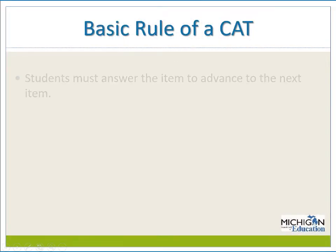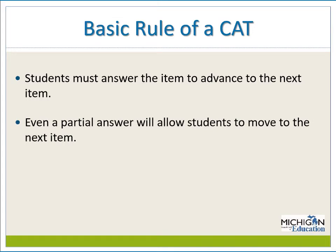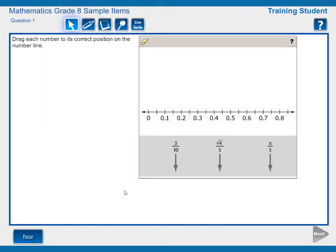In the CAT, students need to answer an item to move to the next item. A partially completed response box will allow students to move to the next item. For example, if the item requires students to move three numbers to correct positions on a number line, moving just one number to the number line will allow them to advance. Note how the Next button is dark gray. This signals that the Next button is active and a student may select Next to advance to the next item.